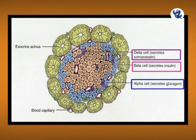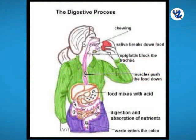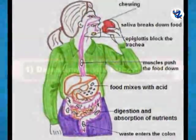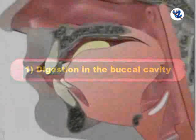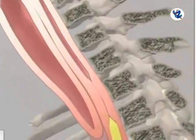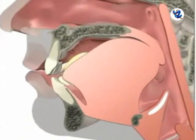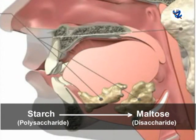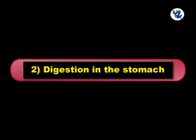Delta cells secrete somatostatin which decreases insulin and glucagon secretion. Then physiology of digestion — complex and insoluble food is converted into simple soluble form by digestion. Digestion in the buccal cavity: food is broken down into small particles by mechanical activities like mastication and chewing. The tongue mixes the food with saliva secreted by the salivary glands. The polysaccharide starch is converted into disaccharide maltose due to salivary amylase or ptyalin.